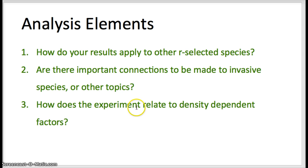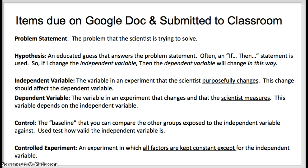We're going to brainstorm more next class after we share out our problem statements. Here are the elements I expect you to have ready: come prepared to share and defend one group problem statement, identify your independent and dependent variables, determine what you need to control, and define your control group and experimental group. Feel free to watch this video one more time if you need to. I also highly recommend doing a little preliminary research on duckweed and keeping track of your sources so you can use them in your citations.